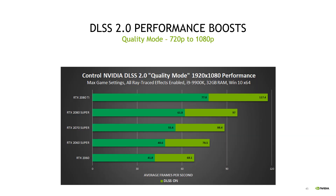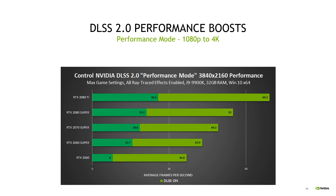Let's look at some real numbers for the performance boost from DLSS 2.0. In quality mode going from 720p to 1080p in Control, we're getting more than 1.5x speedup across the board. In performance mode going from 1080p all the way to 4K, all the frame rates are more than doubled. Look at the 2060 bar — we're going from 8 fps to 37 fps, from a non-playable to a playable experience. This means you can enjoy Control at 4K with all ray tracing effects turned on, with great image quality, on a 2060.